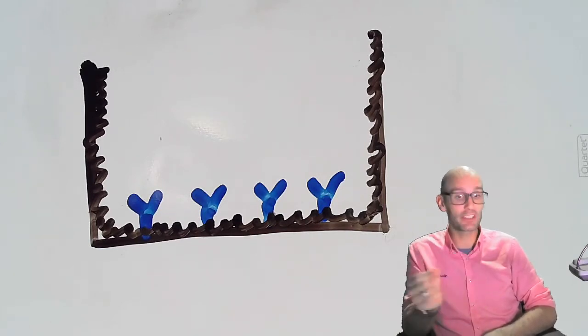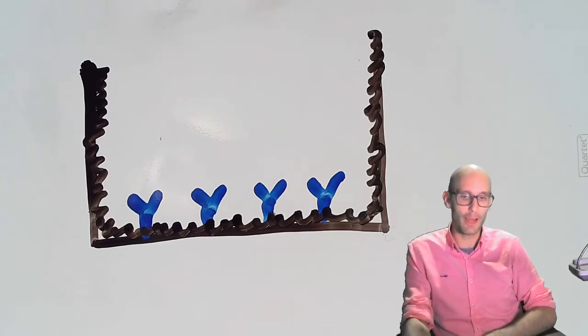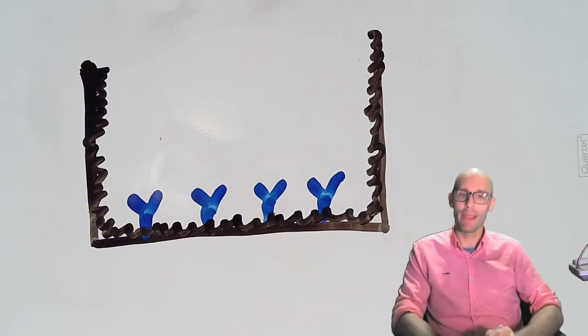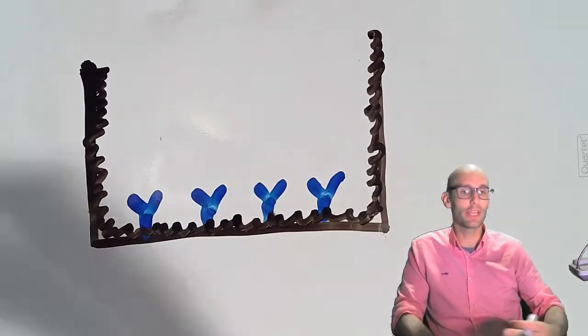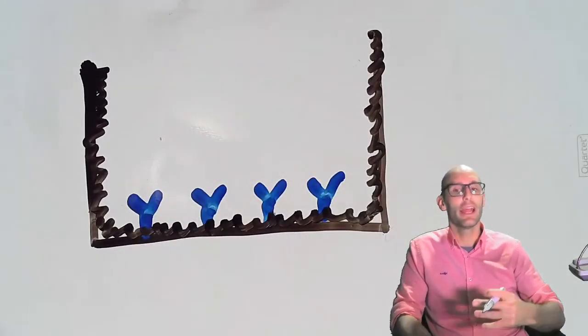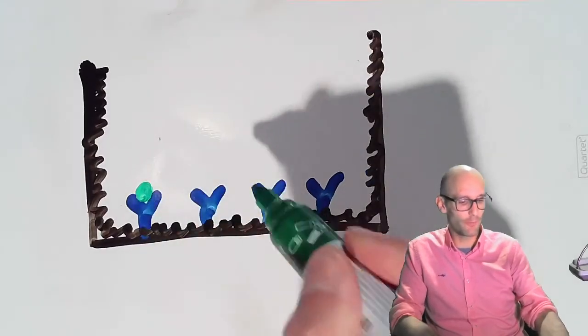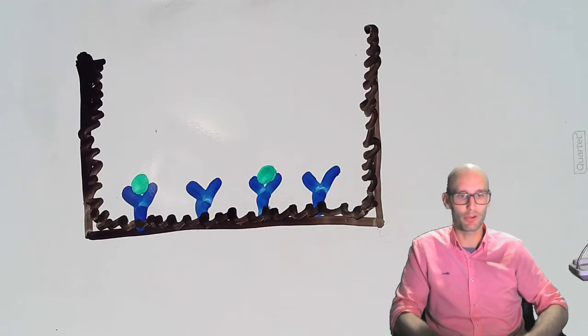Those antibodies are very sticky, but they're only sticky to interleukin 1 beta. So now we put our sample in, and in that sample will contain an unknown amount of interleukin 1 beta. And depending on the amount of interleukin 1 beta, some of that interleukin 1 beta will bind to these antibodies. But it shouldn't fill all the antibodies. In this case, it's only going to fill two of the antibodies.